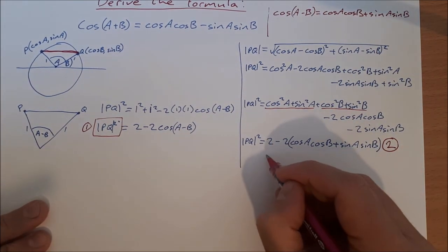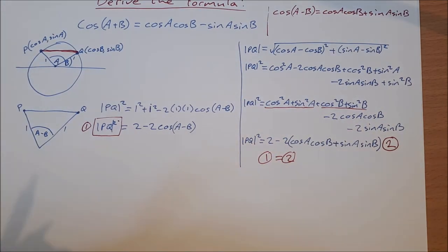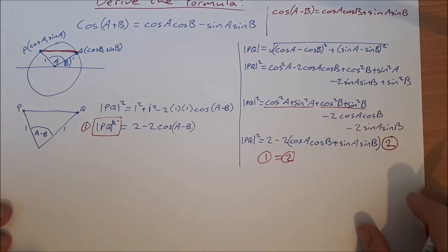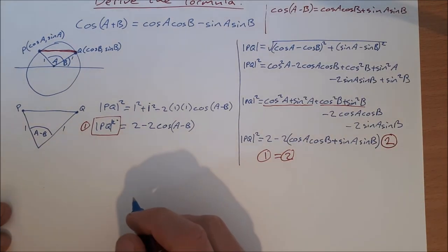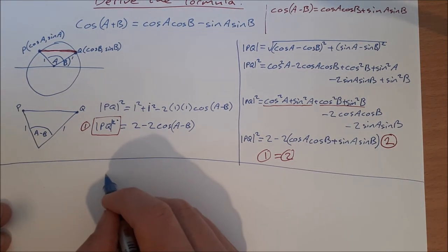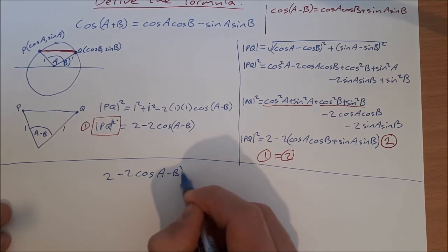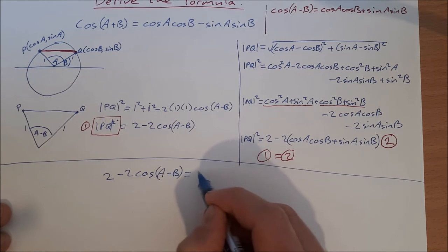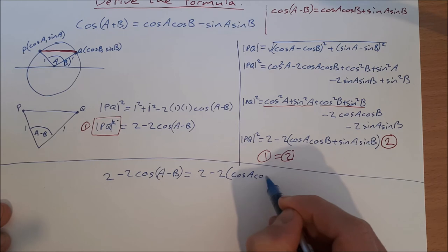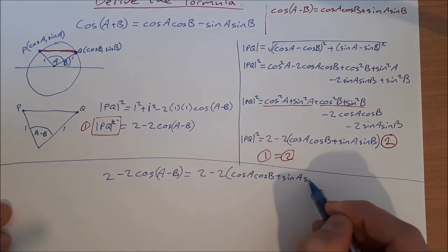What I'm going to do now is say that equation 1 is equal to equation 2. And so far this has all been the exact same as the cos A minus B formula. But we'll see what difference we get now in a second. So letting equation 1 equal to equation 2, we get 2 minus 2 cos of A minus B is equal to 2 minus 2 cos A cos B plus sin A sin B.